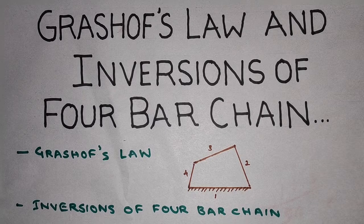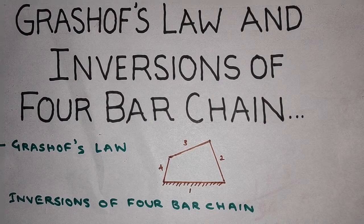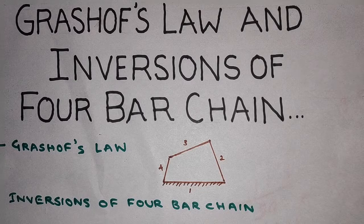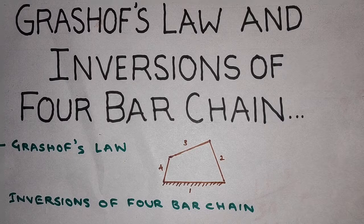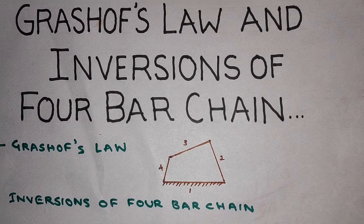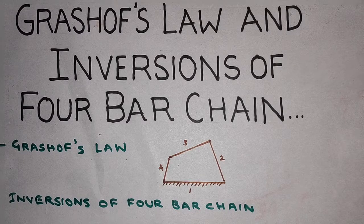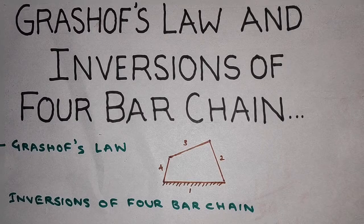Let's begin with this lecture. The definition of Grashof's law is that for a 4-bar mechanism, the sum of the shortest and the longest link should not be greater than the sum of the remaining two links.